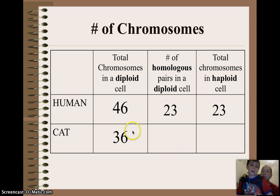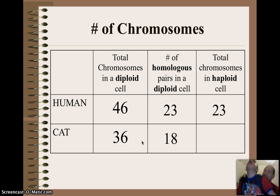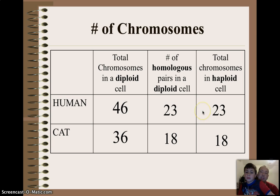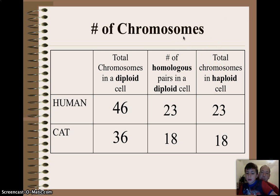Likewise with a cat — we're going to try this with a cat. 36. You know what's half of 36? Is that in second grade math? Probably not. 18. Okay. And so since there's 18 pairs of chromosomes, when that cell splits, it's only going to have 18. This slide is just kind of running us through a little bit of math with regards to pairs of homologous chromosomes versus how many chromosomes are in haploid cells.